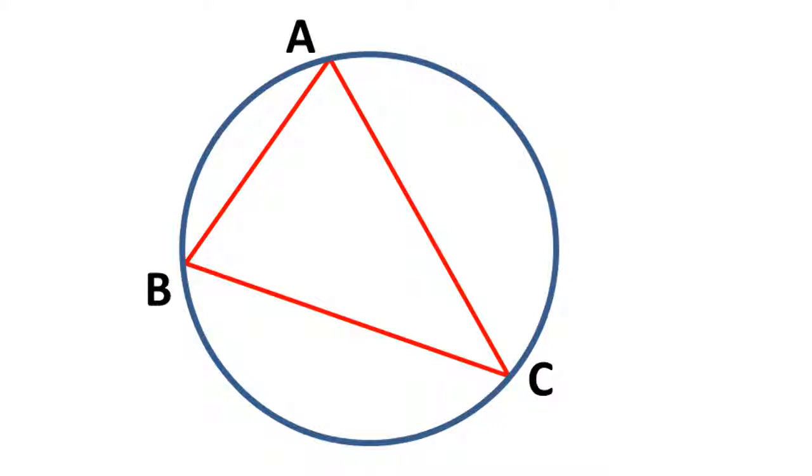How do we do that? We see that if a circle passes through ABC, then AB is a chord of the circle. Therefore, the centre of the circle must lie on the perpendicular bisector of the chord AB.